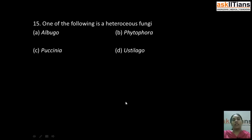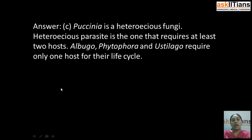Our next question is: which one of the following is a heteroecious fungus? A) Albugo, B) Phytophthora, C) Paxinia, D) Ustilago. The correct answer is C: Paxinia. Paxinia is a heteroecious fungus. Heteroecious fungi are those which require at least two hosts to complete their life cycle. Albugo, Phytophthora, and Ustilago require only one host for their life cycle, so they are not heteroecious fungi.